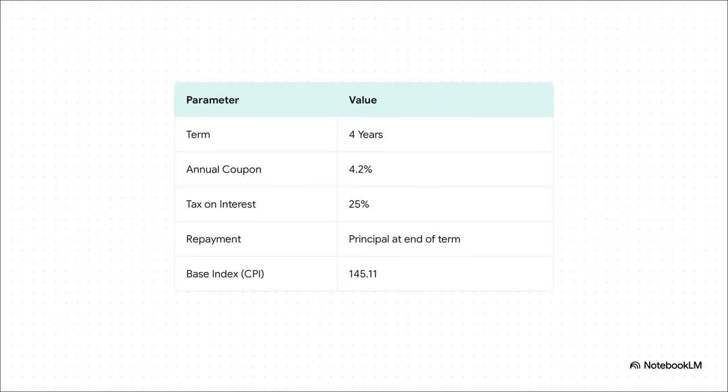Let's dive right in with our example. We're looking at a government bond with a four-year term. It pays an annual coupon of 4.2%, but remember, there's a 25% tax on that interest. The principal — your initial investment — gets paid back at the very end. But here's the really important part: it's index-linked. That means its value adjusts for inflation, and it all starts from a base CPI of 145.11.